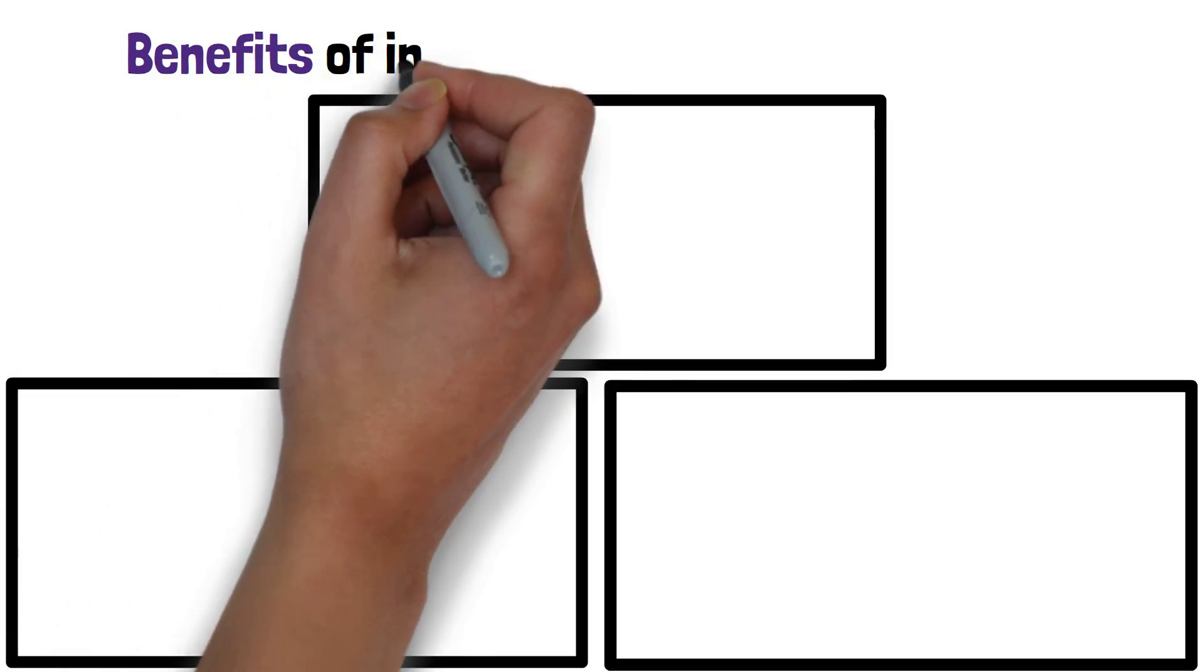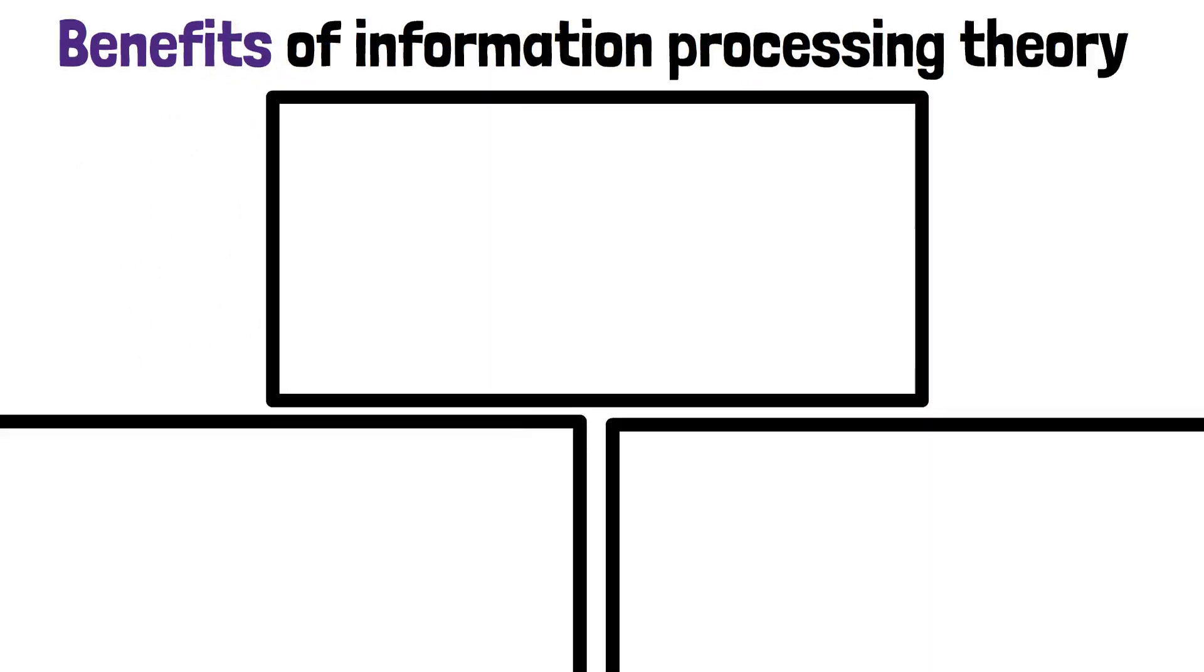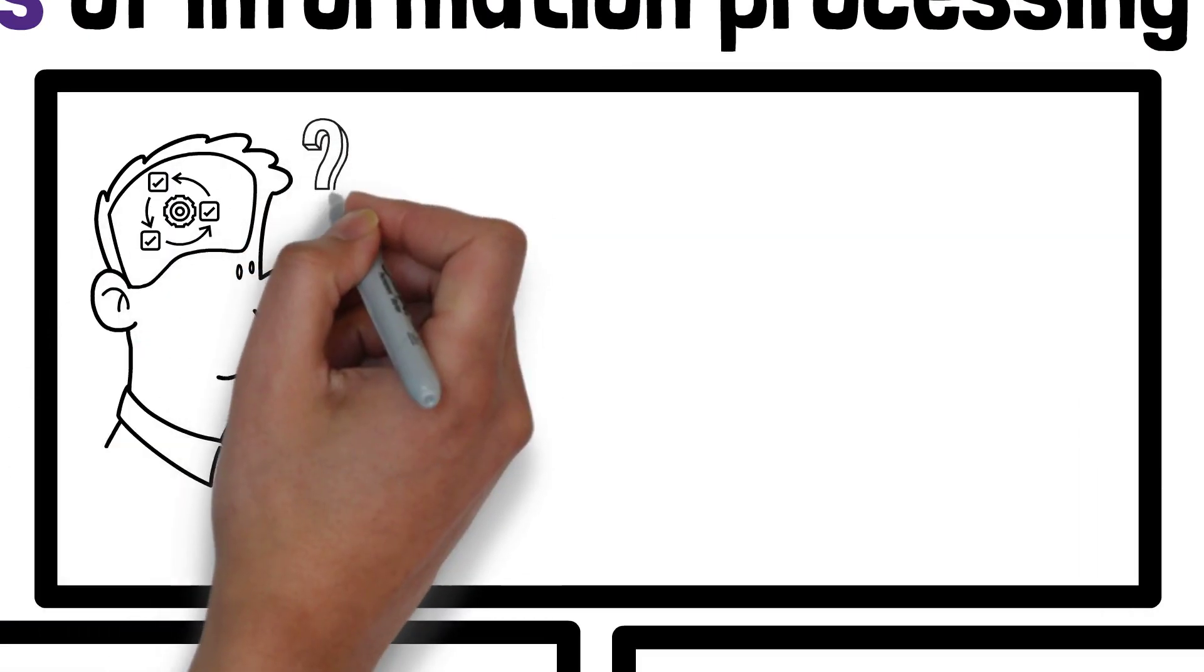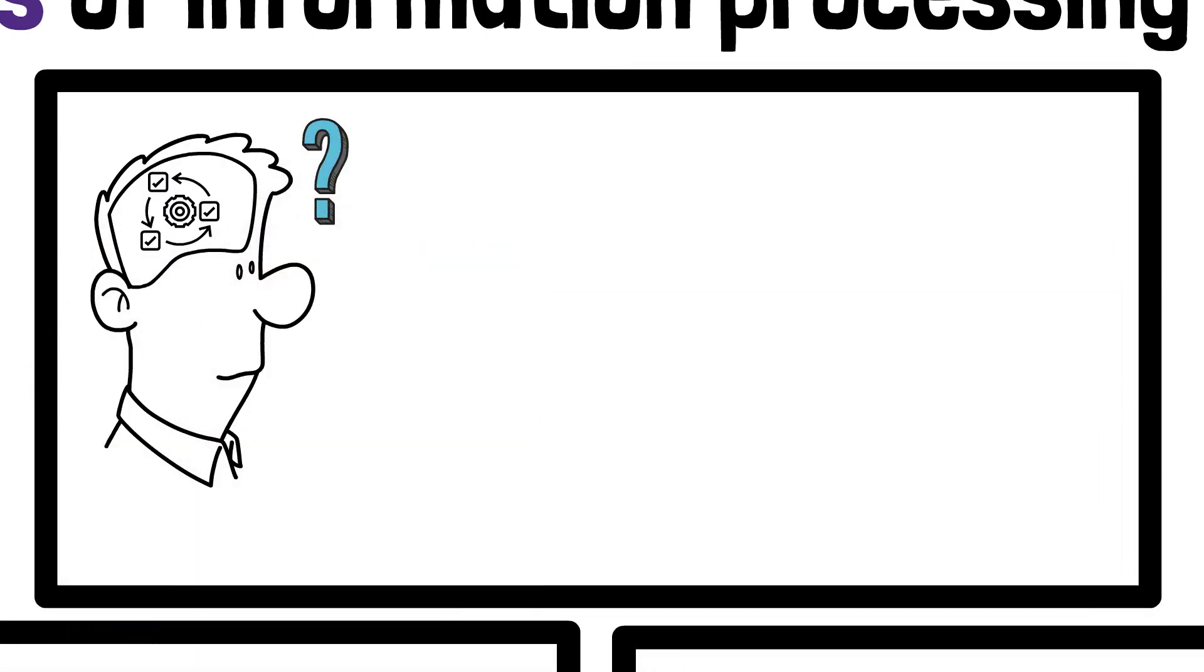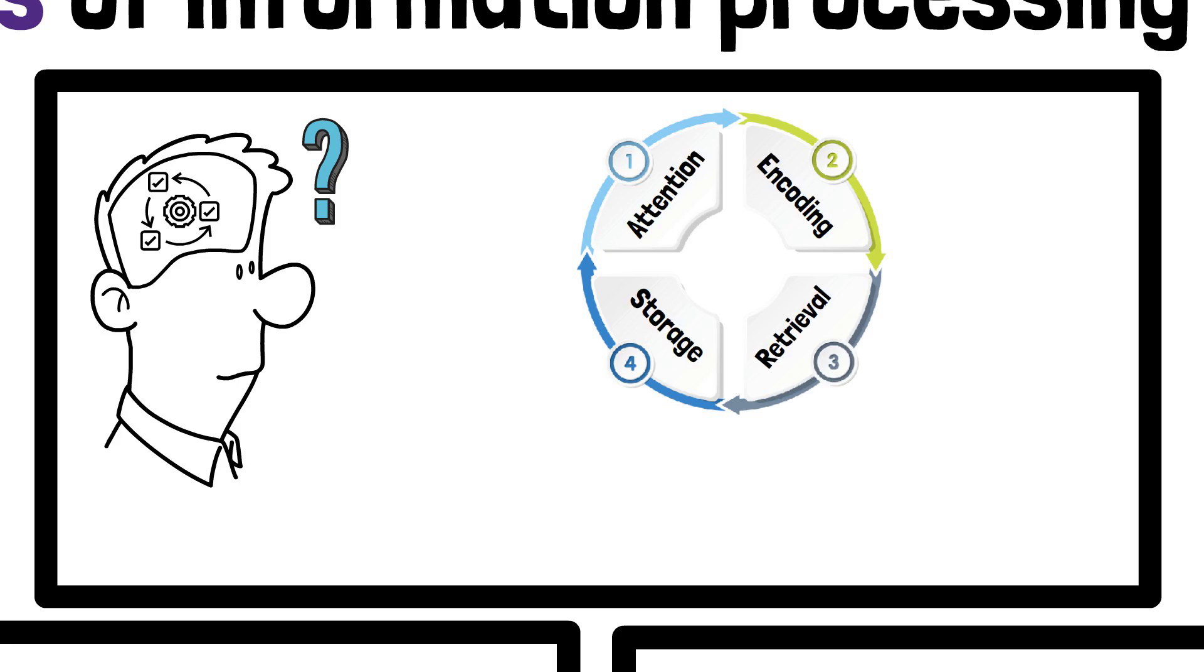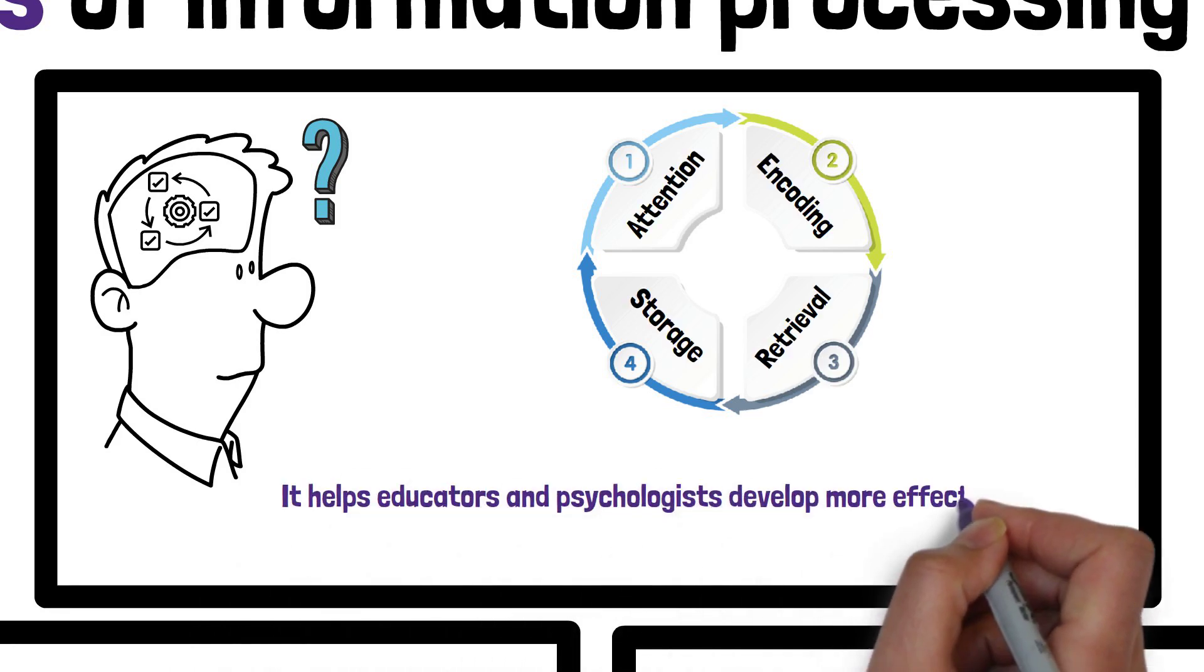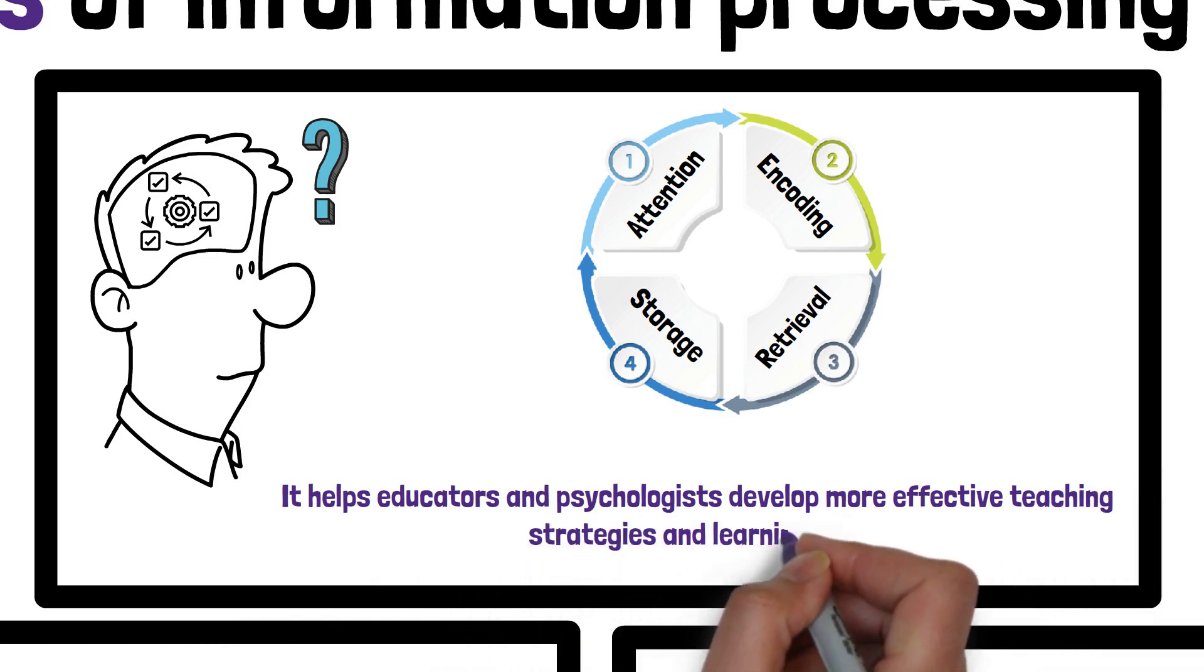Let's look at three benefits of information processing theory. Firstly, it provides a clear and structured way to understand how learning and memory work. By breaking down the process into stages, it helps educators and psychologists develop more effective teaching strategies and learning aids.